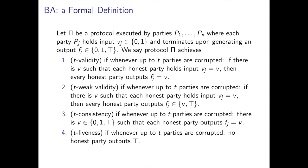The validity property guarantees that if honest parties have pre-agreement on a certain bit before executing a BA protocol, they will preserve this agreement and all output that bit at the end of the protocol. The consistency property guarantees that even if parties are not in agreement before executing a protocol, they will be upon termination — that is, each honest party outputs the same bit. We also introduce a liveness property, which guarantees that under certain conditions parties do not output the extra symbol ⊤, and we require this liveness only when the network is synchronous.